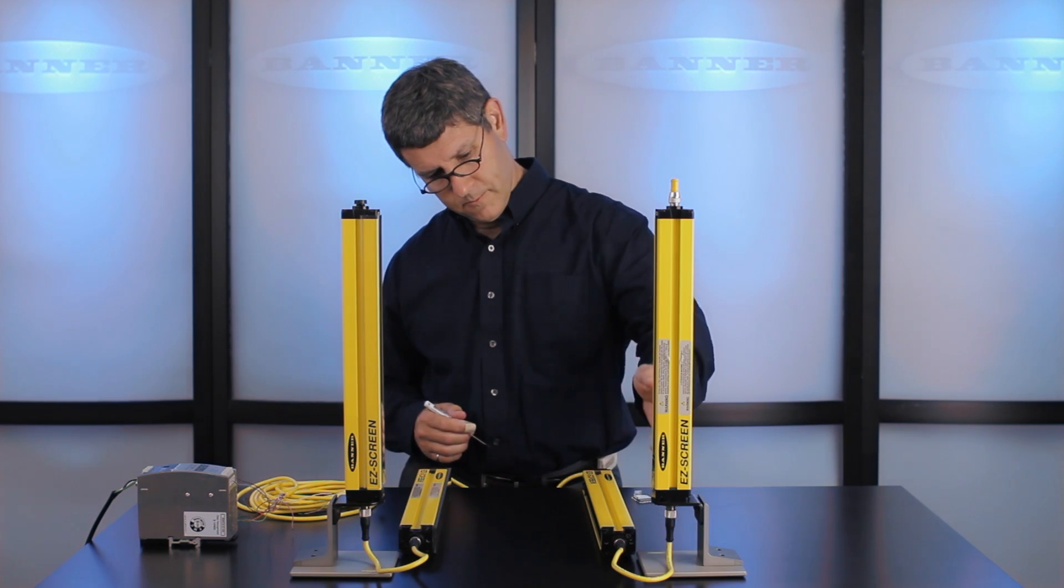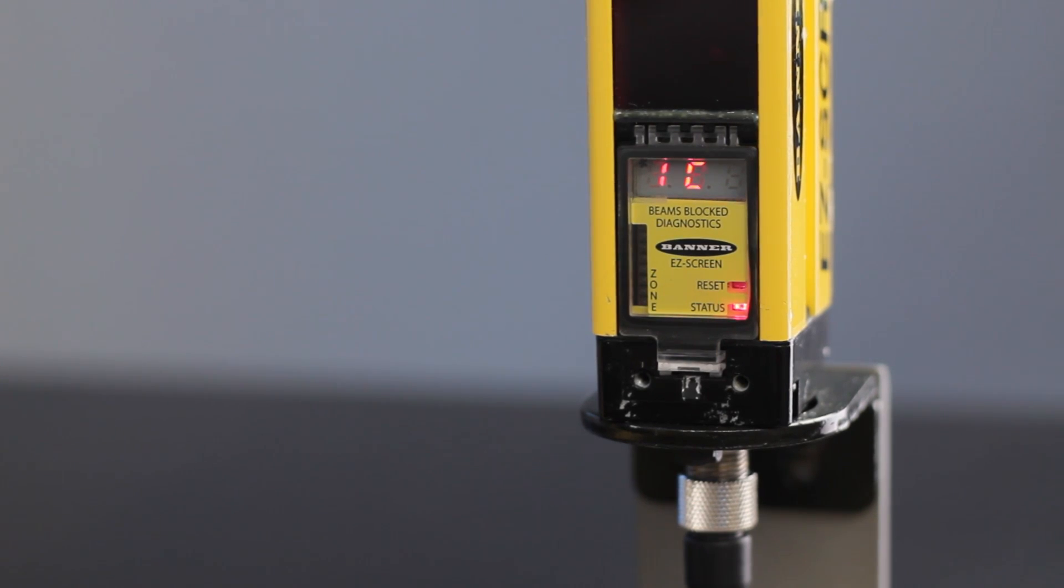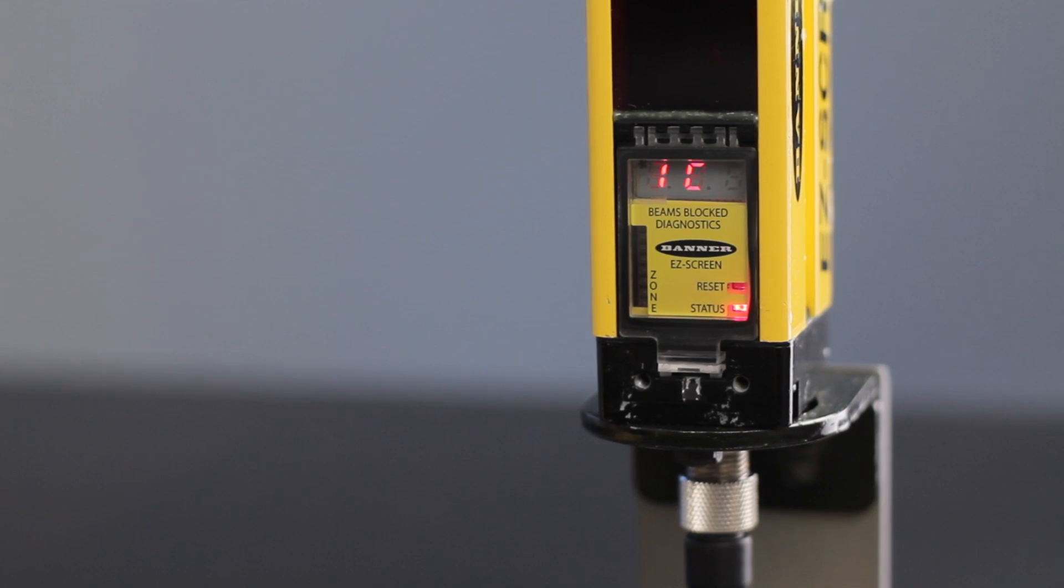The second receiver shows a 1C. If you have additional receivers they will also show 1C.